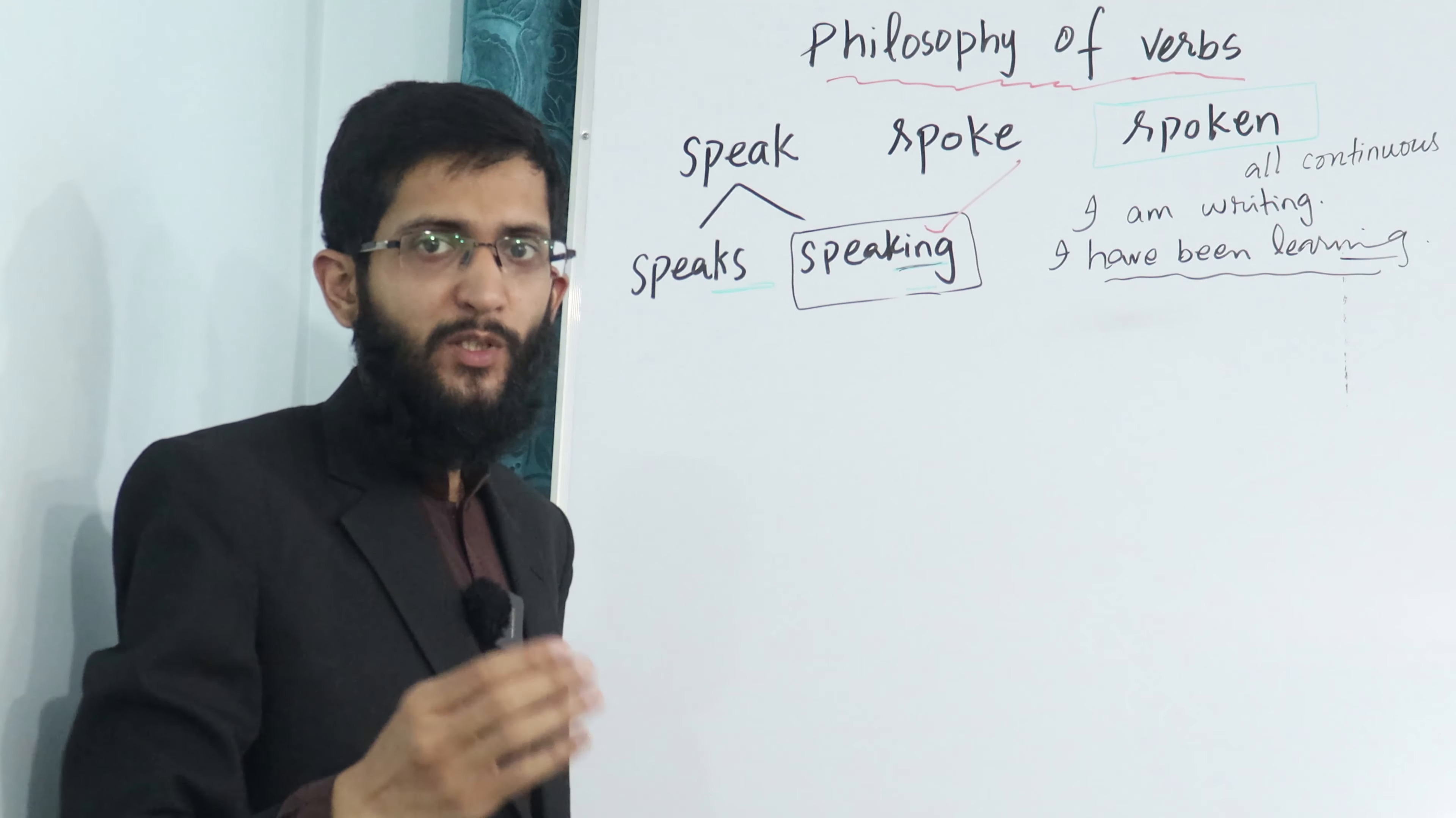The next is, we also use this first form after some prepositions, after 'to'. To speak. Like she wants to speak. So after 'to' we use first form without S or ES or even without other forms. Like you can't say she wants to spoken, or she wants to spoke, or she wants to speaking. That would be incorrect. She wants to speak. She decided to go. She is interested to learn English language. So after 'to' you use first form.